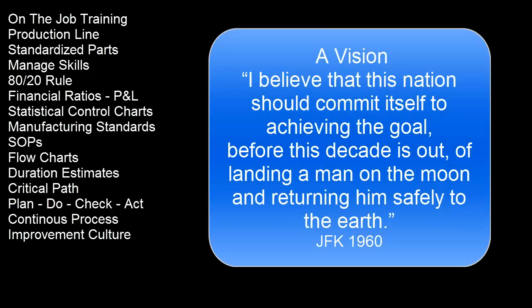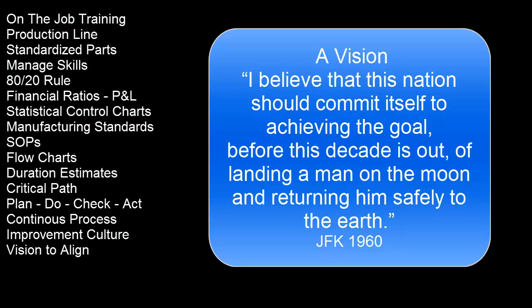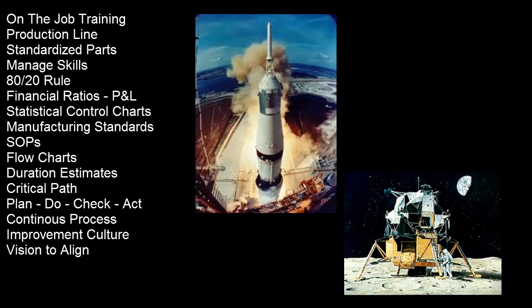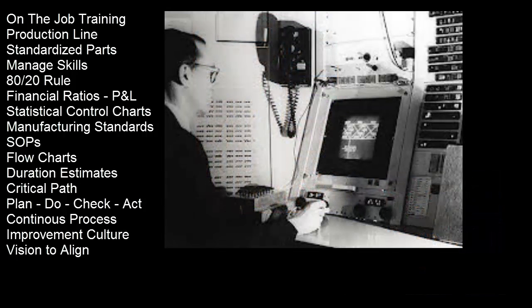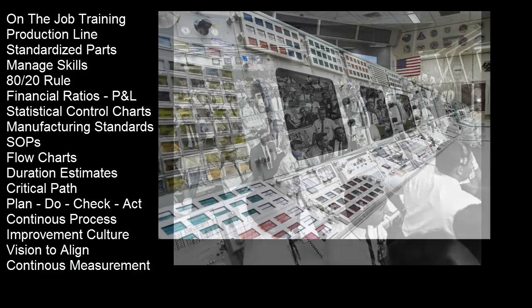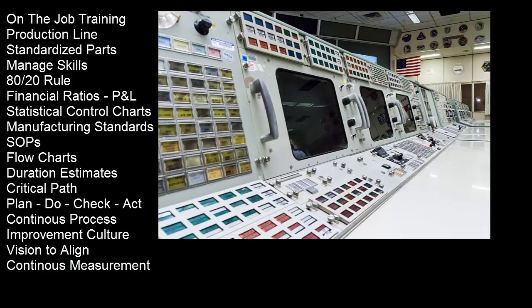After Kennedy challenged the nation to land on the moon, NASA blended Deming's methods, the U.S. Navy methods, and the Pareto concept of 80-20, and for the first time used computer modeling to design and test their rockets and equipment. They also introduced continuous measurement techniques on the rocket ships to allow them to manage the mission using a dashboard — the computer screens and mission control. By the early 1980s, the lessons from NASA's success were picked up by the business community, and businesses adopted the methodologies.